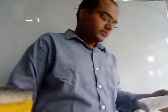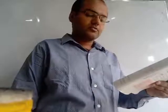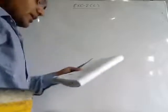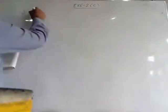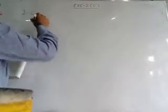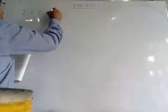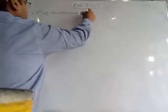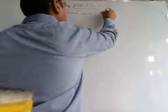The first question: the cost price of a microwave oven is 12,600 rupees. First of all we write the cost price. Cost price means CP. So CP of the microwave oven is given as 12,600 rupees.